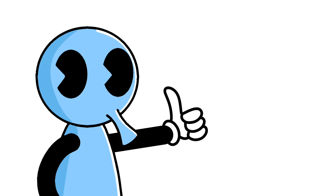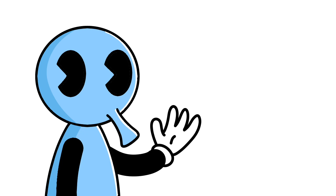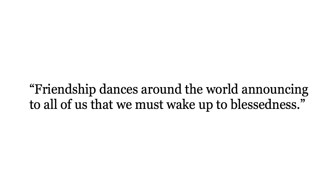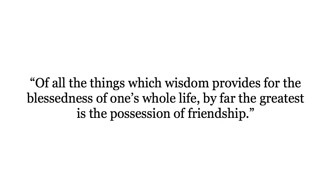Here's a saying by Epicureans from the Vatican collection of his sayings, number 52 if you're playing at home. Friendship dances around the world announcing to all of us that we must wake up to blessedness. And here's his principle doctrine number 27. Of all the things which wisdom provides for the blessedness of one's whole life, by far the greatest is the possession of friendship. Now one can achieve many of the benefits of a romantic relationship through friendship. Friends are people to talk to and socialize with, share passions with, get food with, laugh with, and really good friends can be trusted with your honest feelings and deep secrets.